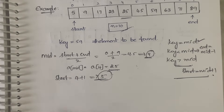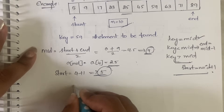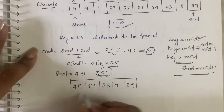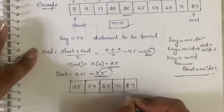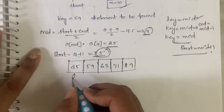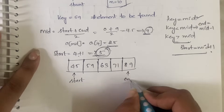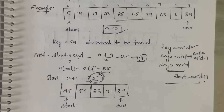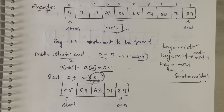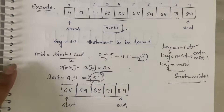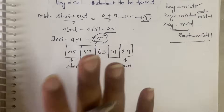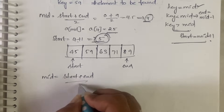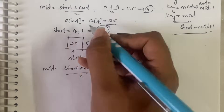Now start is 5 and end remains 9, so our sub-array becomes: 45, 59, 63, 71, 89. This is divide and conquer — you divide the array and solve. Again compute mid: start plus end divided by 2 is 5 plus 9 divided by 2, which is 14 divided by 2, equal to 7.